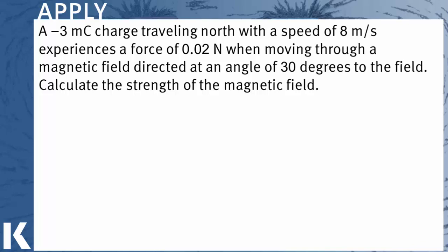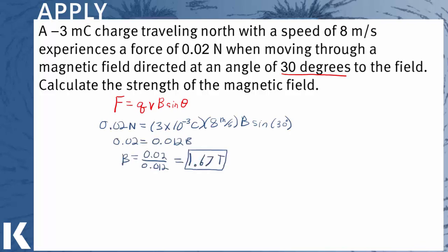So we're moving with 30 degrees to the field, so this will be our theta. You'll start again with the magnetic force equation. Plug in the values given. Then collect all the terms in order to get 0.02 equals 0.012 times the magnetic field strength. And then finally solve by dividing by 0.012 to get a total field strength of 1.67 teslas.